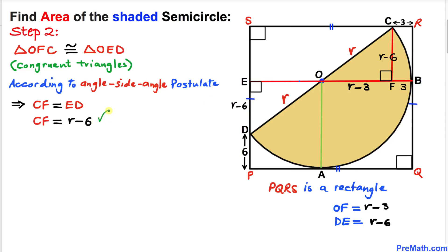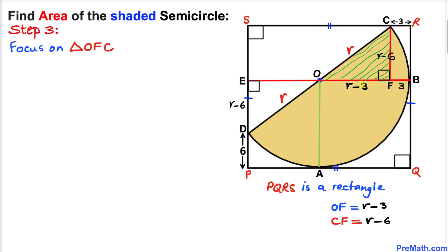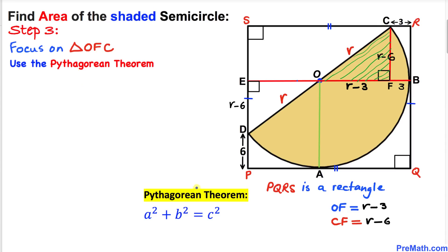Therefore this length CF turns out to be r minus 6. Now in this next step let's focus on triangle OFC. Since this is a right triangle we are going to use the Pythagorean theorem: A squared plus B squared equals C squared. The longest side is the hypotenuse C, and we'll call the legs A and B. So let's apply this Pythagorean formula.